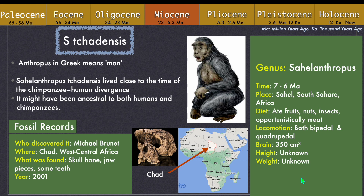Sahelanthropus chadensis lived between 7 and 6 million years ago. They ate fruits, nuts, insects and opportunistically meat of large animals. They had both bipedal and quadrupedal walking capabilities, and their brain capacity is considered to be 350 cubic centimeters. Their height and weight is unknown due to the lack of body fossils. At present, Sahelanthropus chadensis is our earliest known common ancestor. It might also be a common ancestor to both humans and chimpanzees, as they lived close to the time of chimp and human divergence.